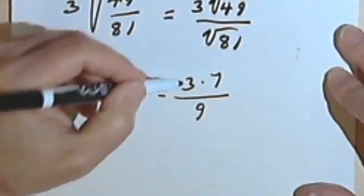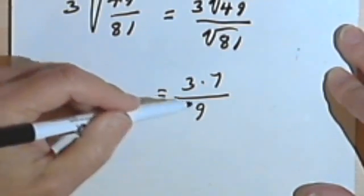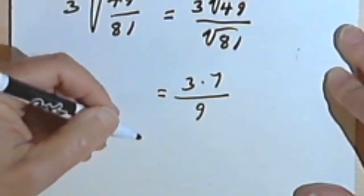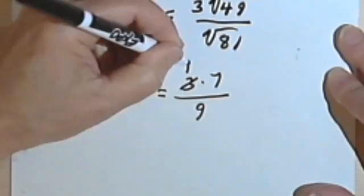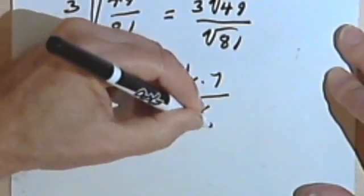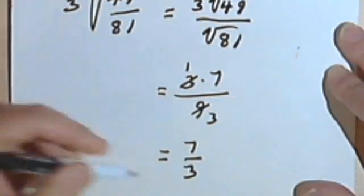And just looking at these, before I multiply the 3 times 7, I realize I can factor a 3 out of the numerator and the denominator. So that makes more sense to do with my next step. So dividing the 3 by 3, I get a 1. Dividing the 9 by 3, I get a 3. And that means my answer is just going to be 7 thirds.